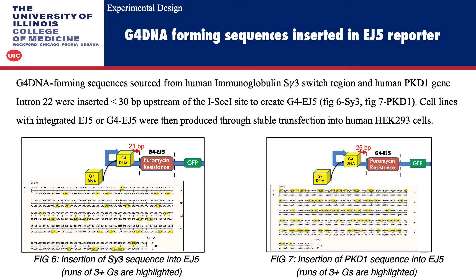G4 DNA-forming sequences sourced from human immunoglobulin switch regions Sgamma3 and the human PKD1 gene in RON22 were inserted less than 30 base pairs upstream of the I-SceI cut site to create G4-EJ5. Figure 6 illustrates the Sgamma3 sequence inserted into EJ5, and figure 7 illustrates the PKD1 sequence inserted into EJ5. The runs of 3 or more guanines are highlighted in the figures, as these have the ability to interact and form G-quadruplexes.